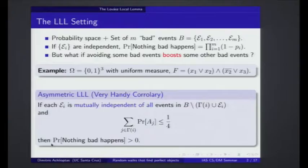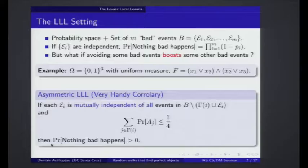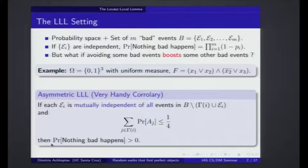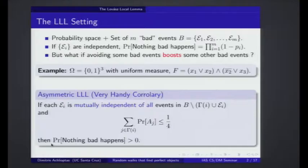A corollary that captures the basic idea in a much more easily digestible form: if each event is mutually independent of all events except those in its neighborhood, and for each event the sum of the probabilities of the events in its neighborhood is bounded by one quarter, then everything works out. For this notation, it's just much more interesting to have a graph. You have a vertex for each event, and then you only connect two events if they are not independent. For each event, you take the summation over its neighborhood events and just ask that they are not very likely — in aggregate their probability can be as big as one quarter.